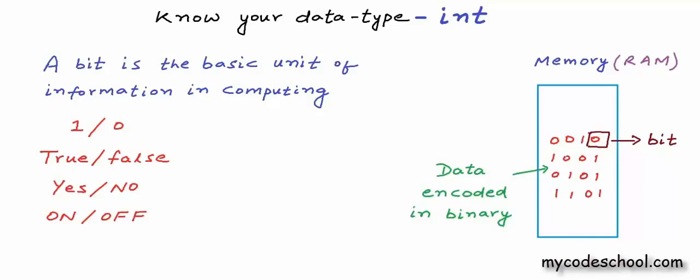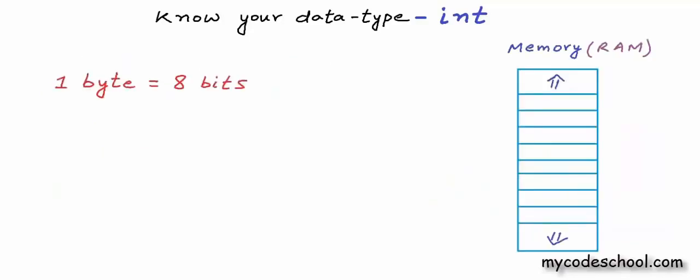A bit can physically be implemented with anything that can have two states — a flip flop in a switch, two distinct voltage or current levels in a circuit, or magnetic polarization. There are multiple ways of simulating a bit. Even though a bit is the most basic unit of information, memory in a typical architecture is organized as a collection of bytes. Eight bits make a byte. In this logical representation of memory, each segment is one byte, so we can store eight bits in each segment.